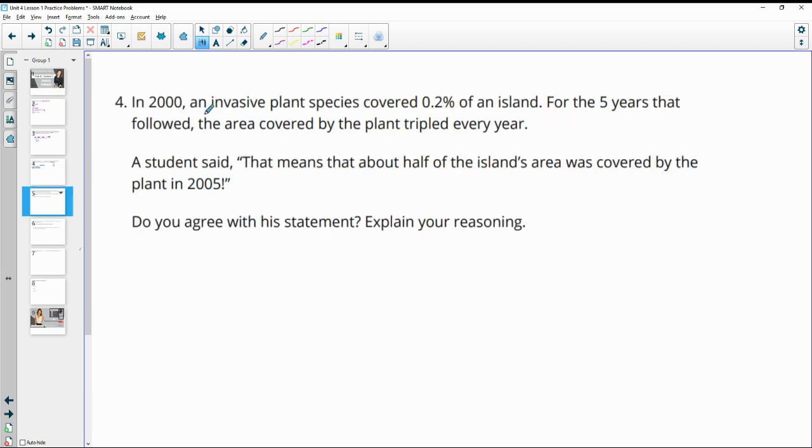Number four: In 2000 an invasive plant species covered 0.2% of an island. For the five years that followed, the area covered by the plant tripled each year. A student says that means about half the island's area was covered by the plant in 2005. Do you agree? So half is about 50% of the island. So let's take a look here.